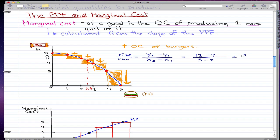12 minus 9 is 3, and 3 minus 2 is 1. That is equal to 3, so that's how we got the marginal cost for 2.5.